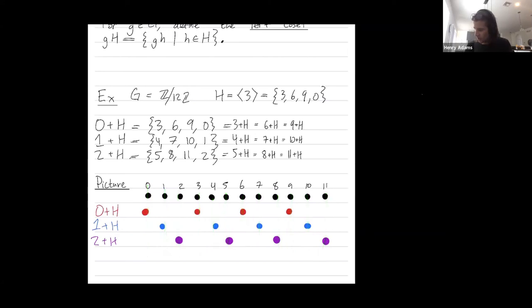Another comment is that the cosets all have the same size. So the cosets here all have size 4.